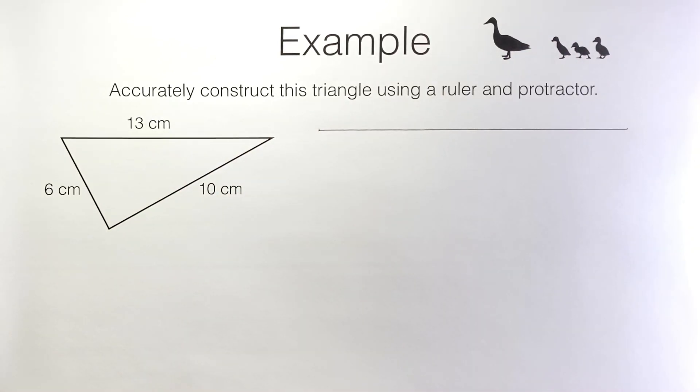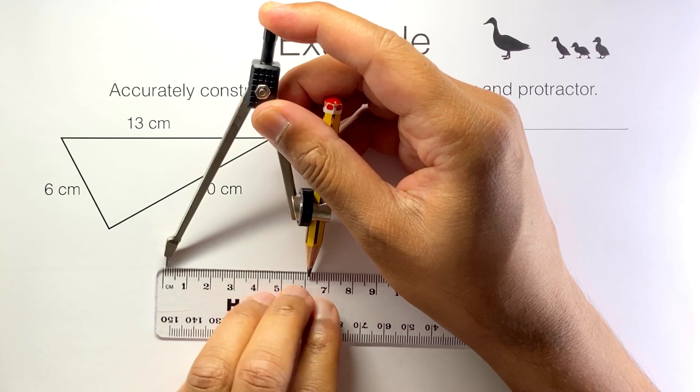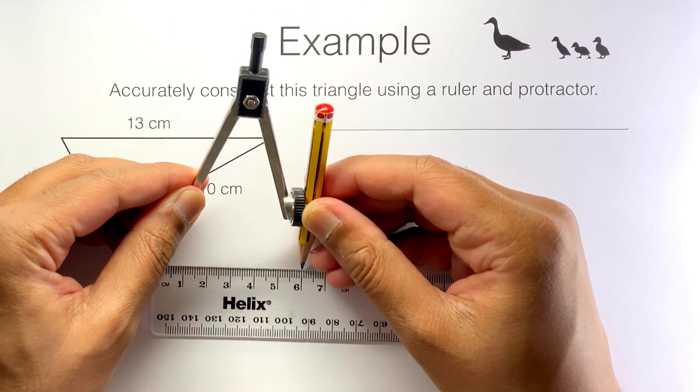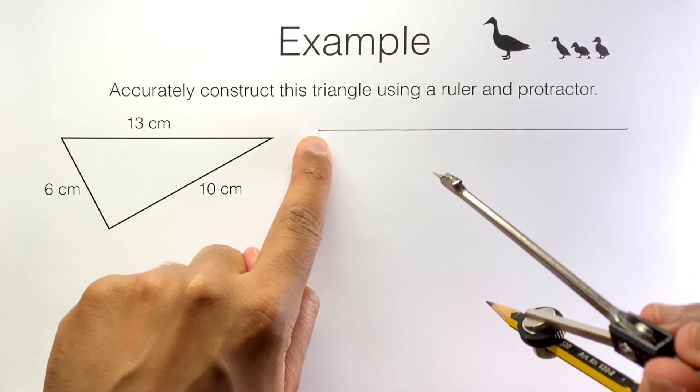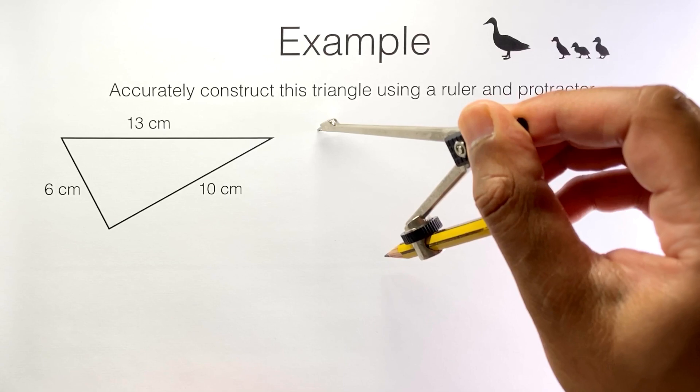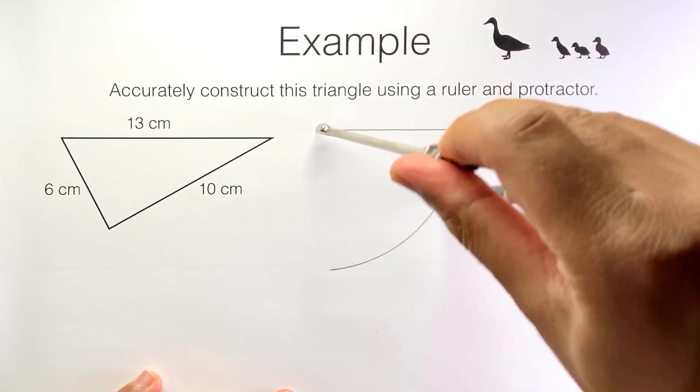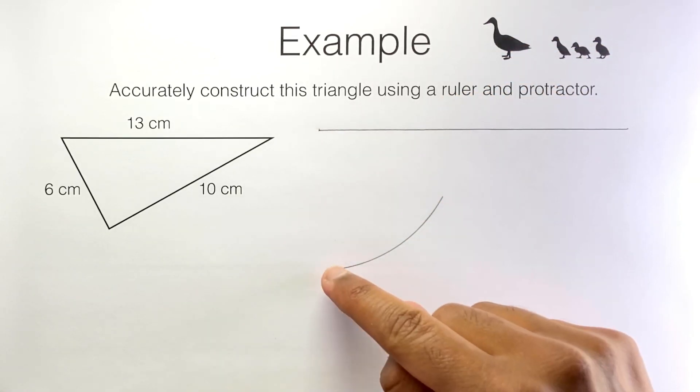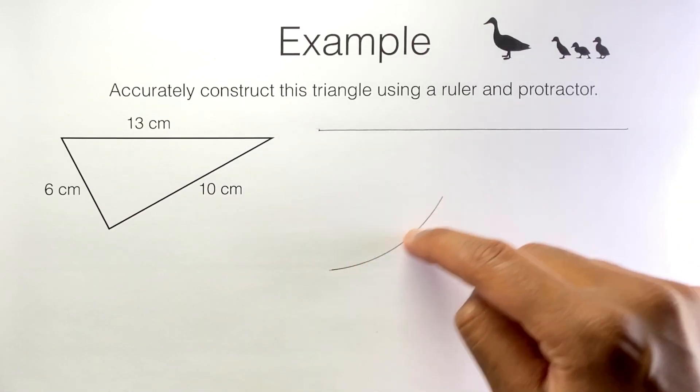So I'm going to use my compasses here. I'll measure out the compasses to six centimeters, like this. I'm going to place the compass needle at this end of the 13 centimeter side, like that. And then I'm going to draw an arc down here. Every point on this arc is six centimeters from that point there. That's how compasses work. So we know this vertex is going to be somewhere on this arc.